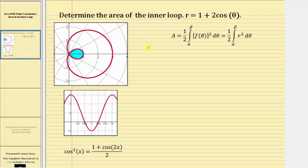So in our case, we will have the area A is equal to one half times the integral. f of theta, or r, is one plus two cosine theta, which means the integrand function is the square of one plus two cosine theta, d theta.